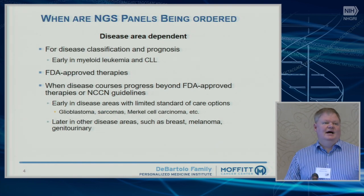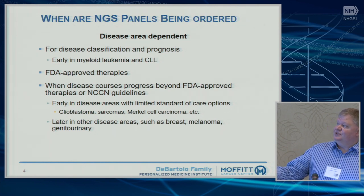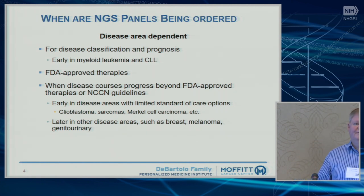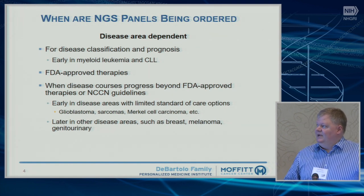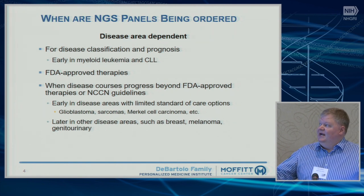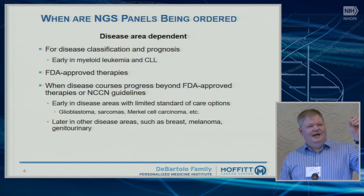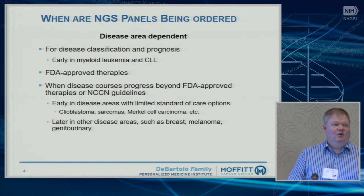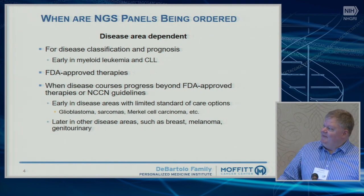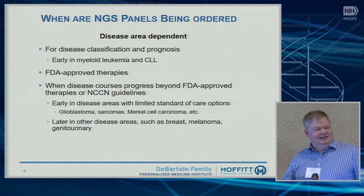There are three different areas where the bulk of cancer testing is being done. Most of it is still in the tumor — in disease classification and prognosis, mainly in hematologic malignancies. There's a lot of differentiation of who needs to go straight to bone marrow transplant versus who needs a chemo-based drug or kinase inhibitors, based on prognostic factors. Then there are FDA-approved therapies — for instance, if you have a BRAF mutation in a melanoma, you get a BRAF inhibitor. That directs a one-test, one-drug type relationship.